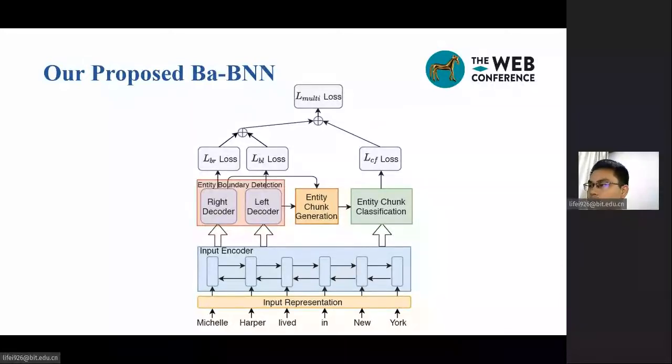First, each word in the sentence is mapped into its embedding, and the input encoder encodes the embedding into a context-aware representation. Next, the entity boundary detection deploys bidirectional decoders with boundary-aware binary classifiers to detect entity boundaries in two different directions via the pointer mechanism.